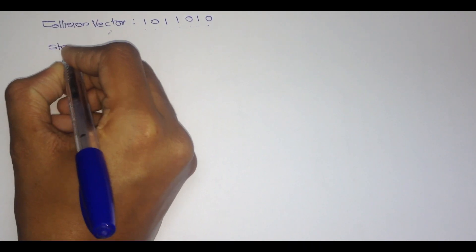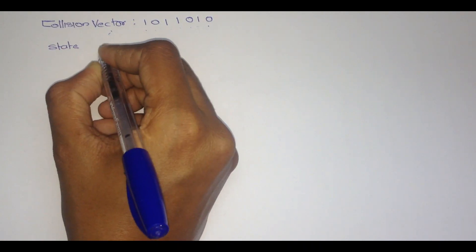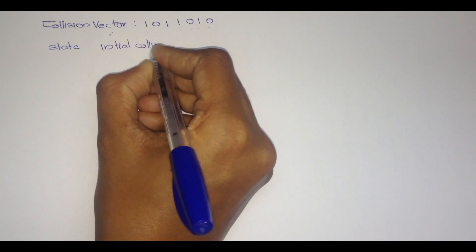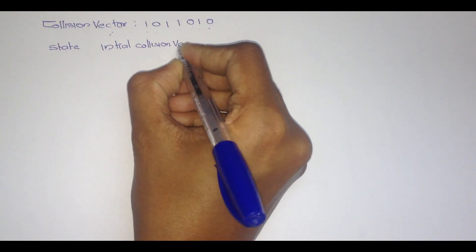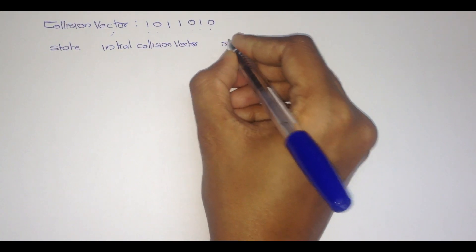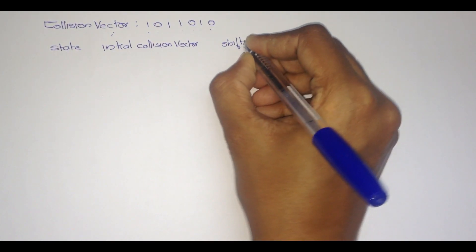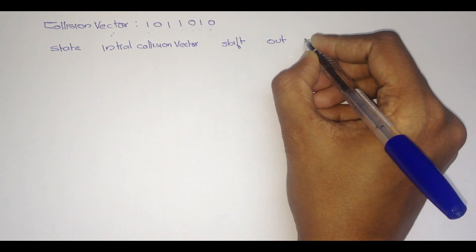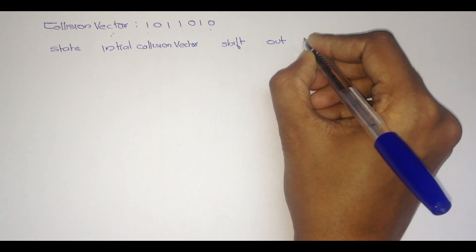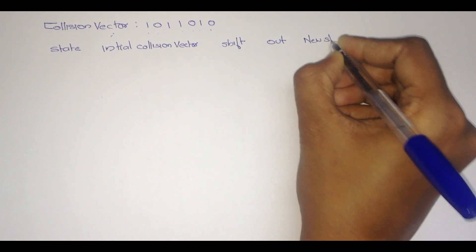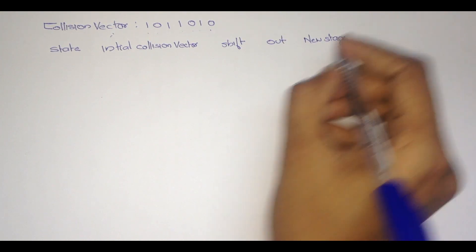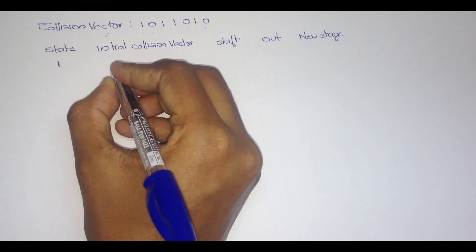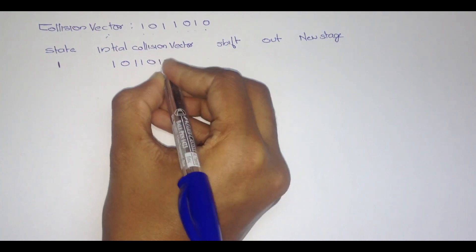First of all, we have to write the state and initial collision vector, then next is shift, which variable is going to out, and whether a new stage is formed or not. The initial state 1 has initial collision vector 10111010.